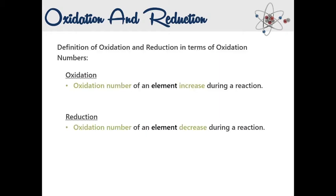We can also define oxidation and reduction in terms of oxidation number. From the example, the oxidation number of sodium increased while the oxidation number of chlorine decreased after the reaction. Since sodium is oxidized and chlorine is reduced, we can say: when the oxidation number of an element increases during a reaction, it is oxidized; when the oxidation number of an element decreases during a reaction, it is reduced.